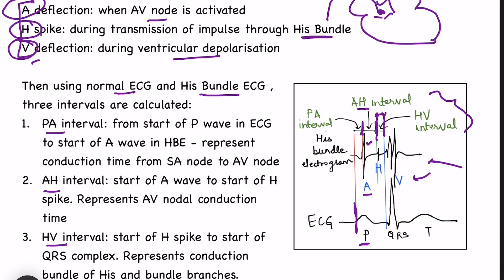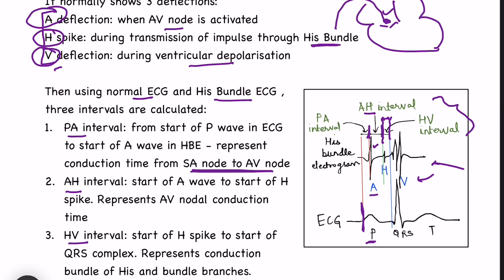The PA interval represents conduction time from the SA node to the AV node. The AH interval — since A is during AV node activation and H is during His bundle activation — represents the time delay in the AV node, i.e., AV node conduction time. The HV interval, from His bundle to ventricular depolarization, represents conduction through the bundle of His and bundle branches. Whichever interval is delayed, we can find out where the problem is.